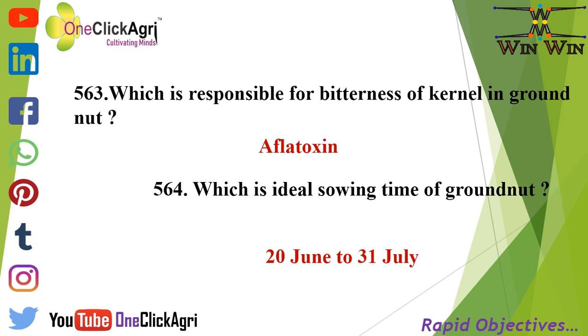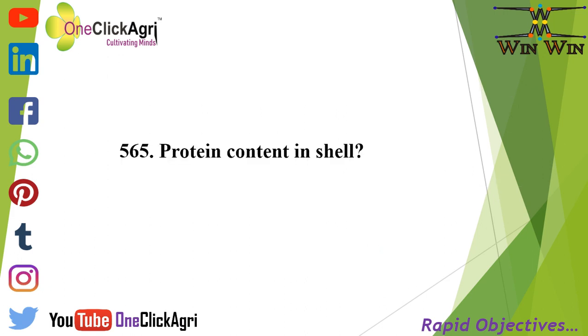What is the ideal sowing time of groundnut? 20 June to 31st July. Protein content in shell is 7 percent.